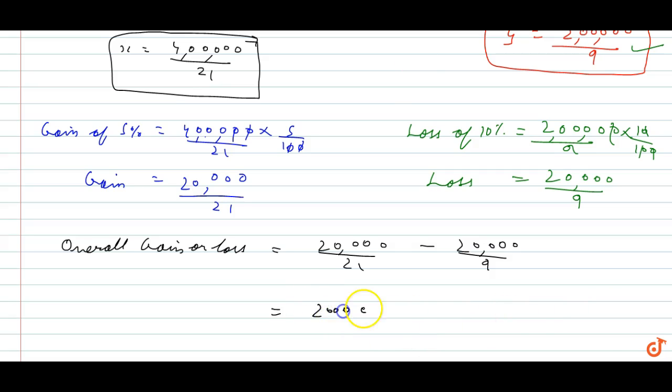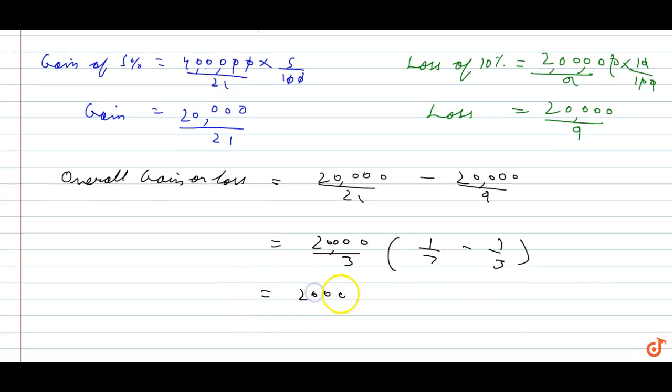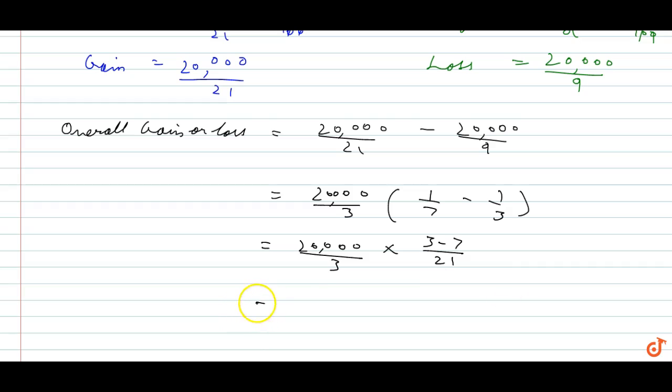Taking 20,000 upon 3 common, this will become 1 upon 7 minus 1. So 3 minus 7 is negative 4, and 4 into 2 is 8 upon 3 into 21.